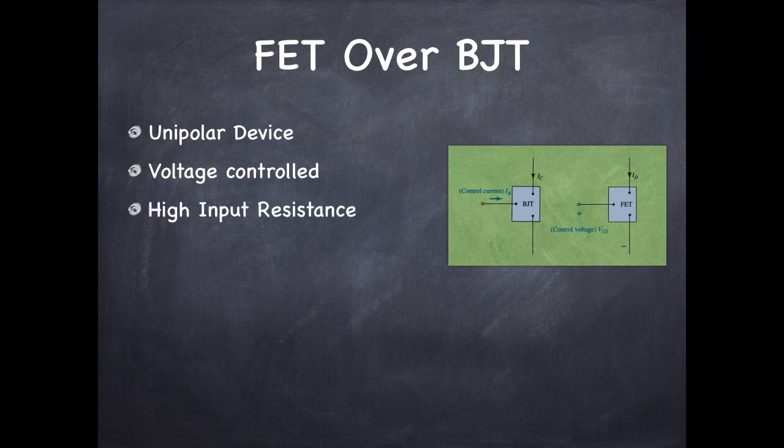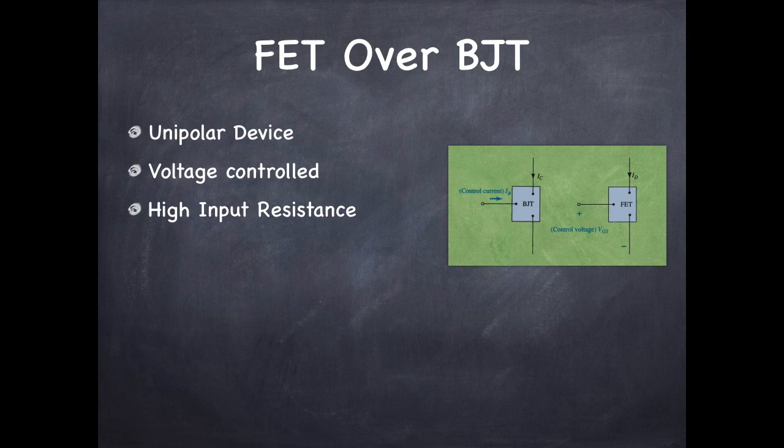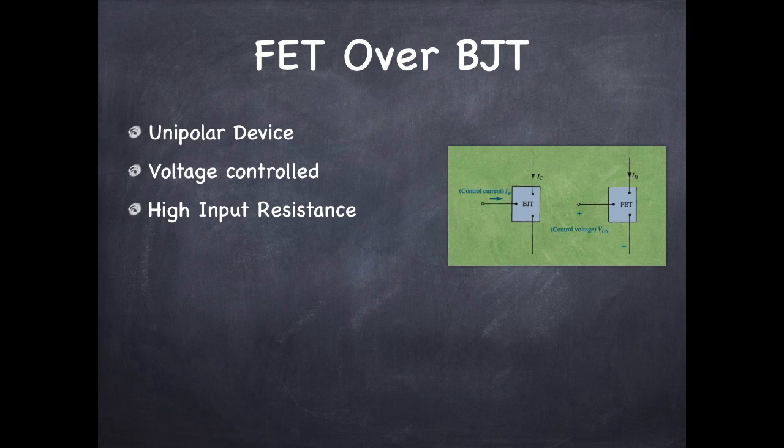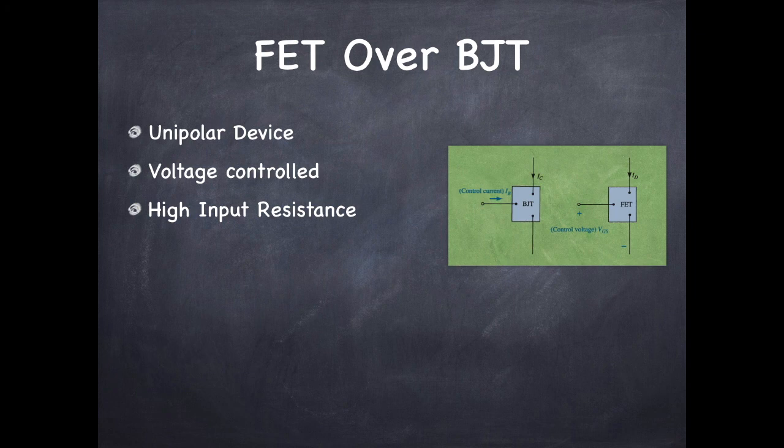One of the most important characteristics of FET is its high input impedance and it is quite high compared to the BJT. It varies between 1 mega ohm to hundreds of mega ohms. This is a very important characteristic in the design of linear AC amplifier systems.